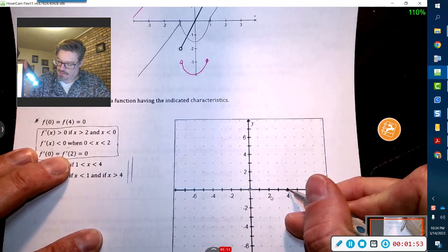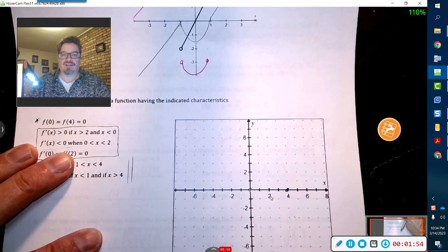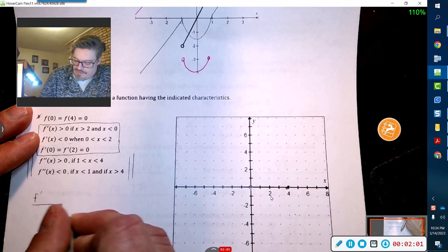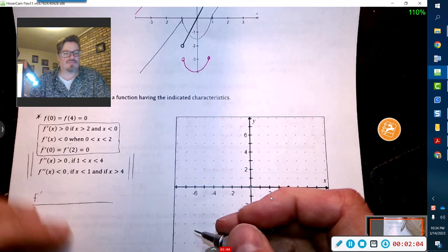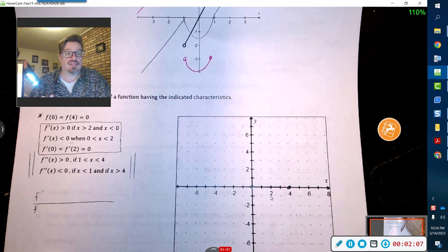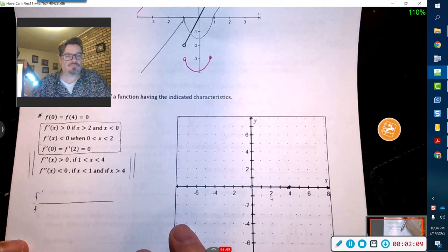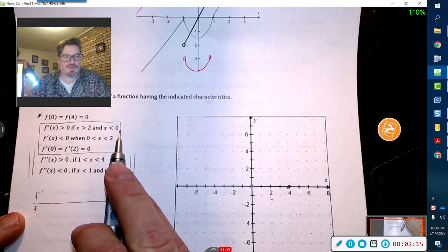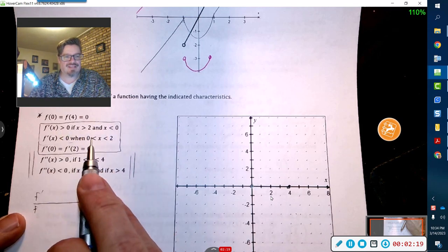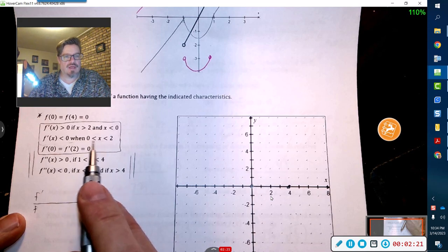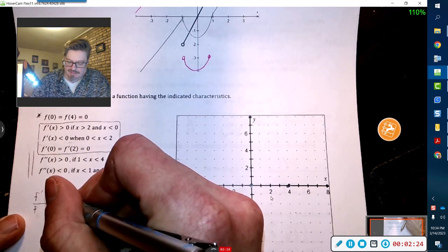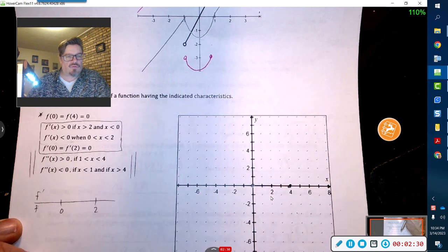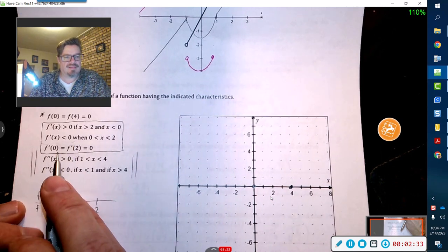Now what I'm going to do is make my first derivative table so I can get an idea of where this guy is increasing and decreasing. That's the fundamental part. If x is greater than 2 and if x is less than 0, then this guy is positive. If he is in between 0 and 2, then he's negative. So 0 and 2 are my critical numbers.